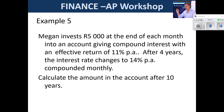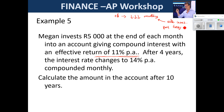Example five — Megan is investing R5,000 at the end of each month into an account giving compound interest with an effective return of 11% per annum. Straight away, highlight that in your exam because we have an effective rate but Megan is paying monthly. The rate must correspond with the payment frequency — if you're paying monthly, you need a rate per month. So first things first, I must convert the effective rate.